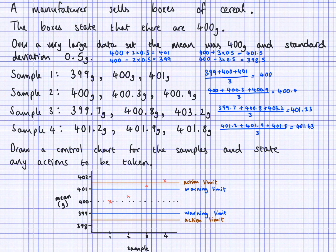It's also worth noting that it didn't need to have gone inside the warning limit first for us to reset. If the third sample was within the normal range but the fourth one comes outside the action limit, we will still reset. So we don't need to be warned before acting — if any sample comes outside the action limit, we immediately reset. And anytime it falls between the warning limit and action limit, we take another sample immediately. This applies to both the upper and lower limits.